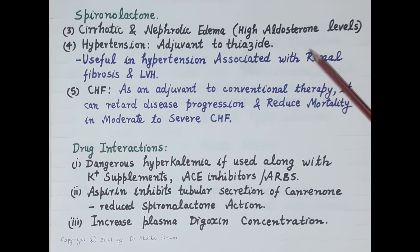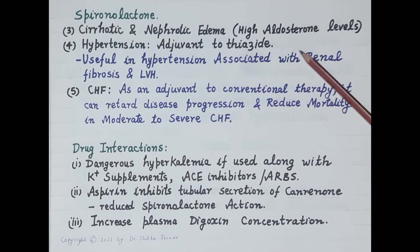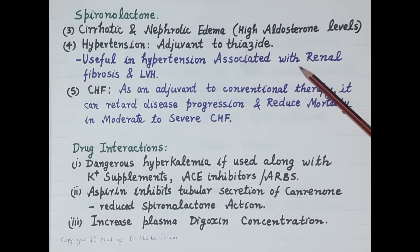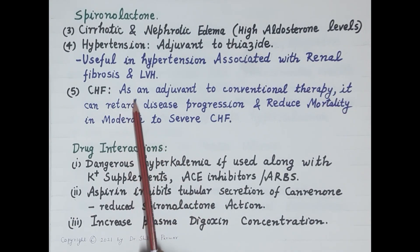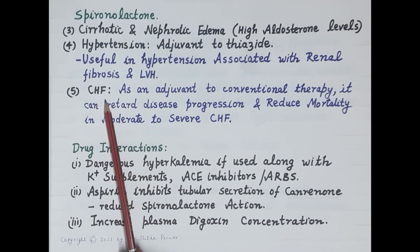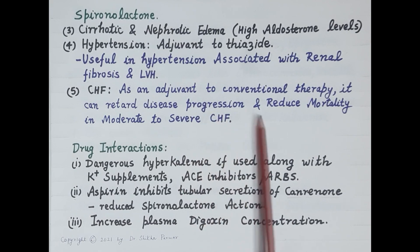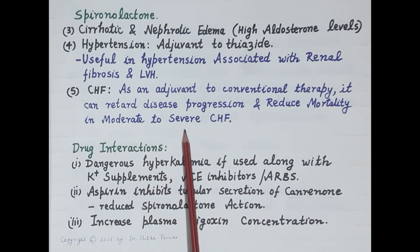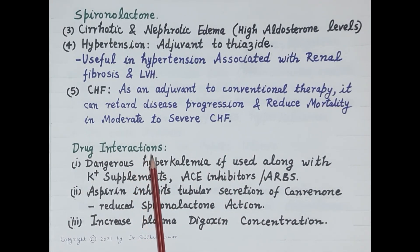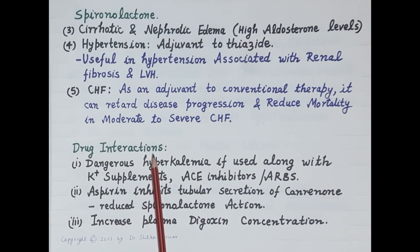Spironolactone is very useful in cirrhotic and nephrotic edema, in which aldosterone levels are generally very high. In hypertension, spironolactone is used as an adjuvant to thiazides, and since it prevents loss of potassium in the urine, it is useful in hypertension-associated renal fibrosis and left ventricular hypertrophy. As an aldosterone antagonist, it is also useful in congestive heart failure as an adjuvant to conventional therapy, retarding disease progression and reducing mortality in moderate to severe congestive heart failure.